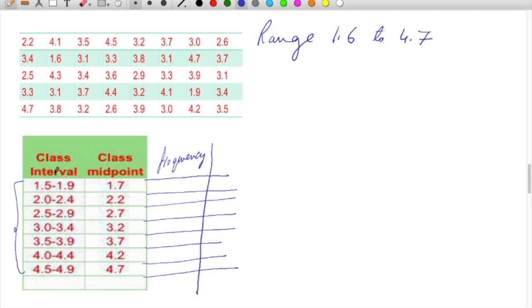Now look at first values: 2.2, that falls in this range, I can draw 1. Then 4.1, that may be over here. Then 3.5 may go over here, 4.5 will be up here, then 3.2.